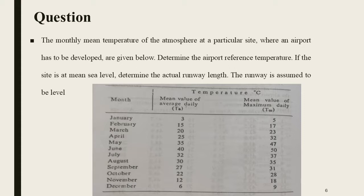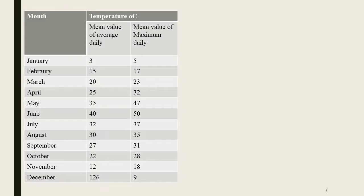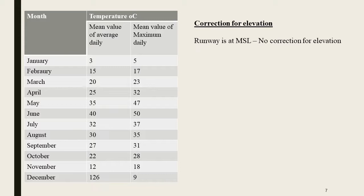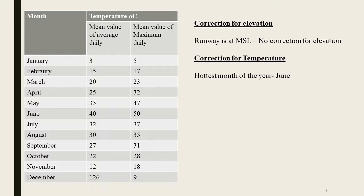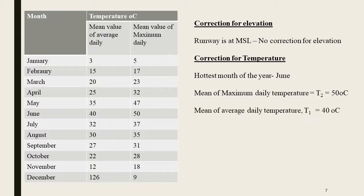The mean value of average daily temperature and the mean value of maximum daily temperature are given. At the correction for temperature, the hottest month of the year is June. The mean of maximum daily temperature, T2, is 50 degrees Celsius. The mean of average daily temperature for the hottest month of the year, June, T1, is 40 degrees Celsius.